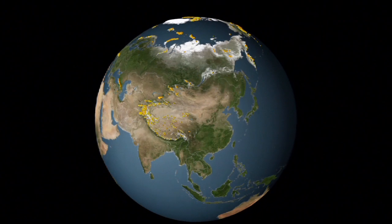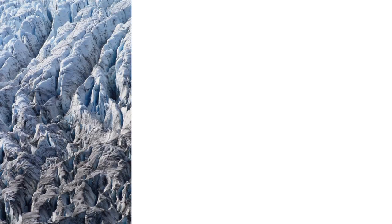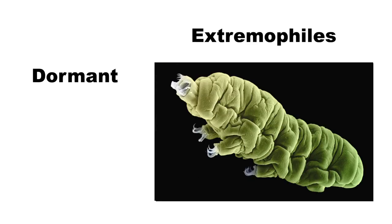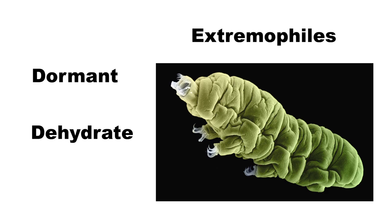On Earth, organisms that survive in extreme environments, known straightforwardly as extremophiles, can sometimes go dormant or even dehydrate until conditions improve and they can come out of hibernation.